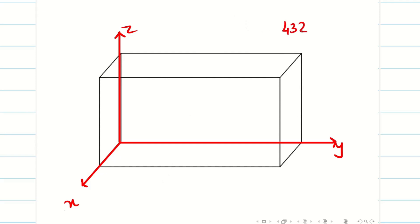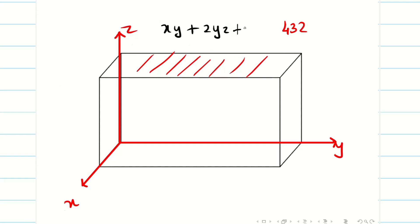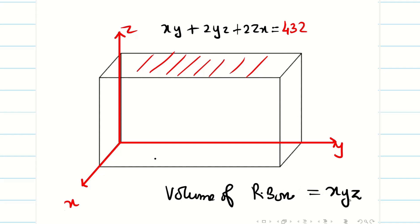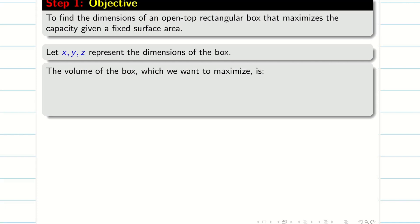The surface area given is 432. Since we are leaving the top of the box open, the surface area is: xy + 2yz + 2zx = 432. The area of a rectangle with sides x and y is xy. The volume of the rectangular box is simply xyz. Therefore, my objective function f is xyz, and the given constraint g = 0 is xy + 2yz + 2zx − 432 = 0.